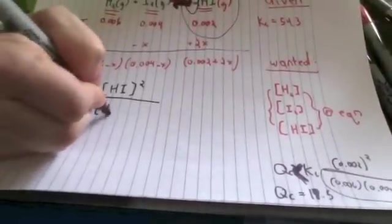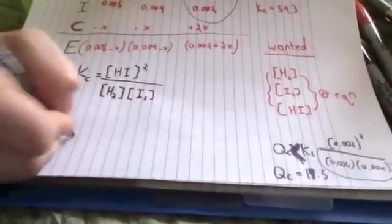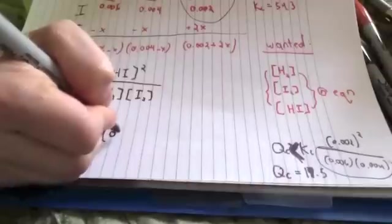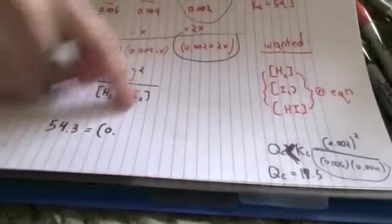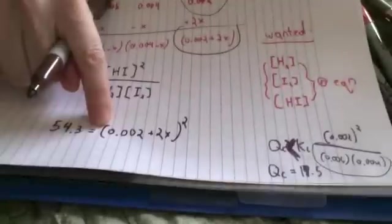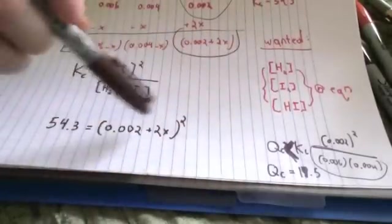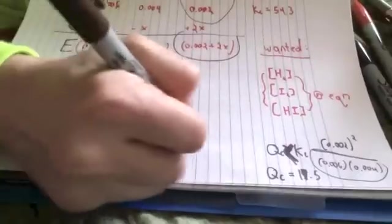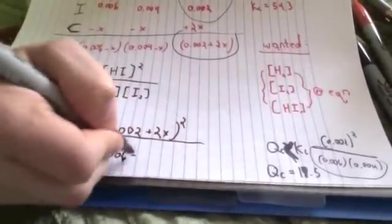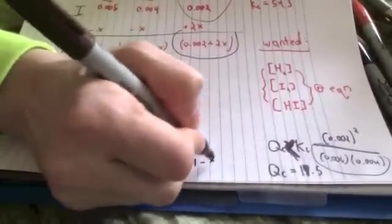And Kc is equal to 54.3, so here I go. 54.3 is equal to, in parentheses, 0.002 plus a 2x squared. Notice here, remember, I remembered to put all of this in parentheses, meaning I'm actually going to have to foil, I'm going to have to go ahead and take this entire thing, multiply it by itself, which you might have heard was foiling, divided by 0.006 minus x times, all of that, times 0.004 minus x.